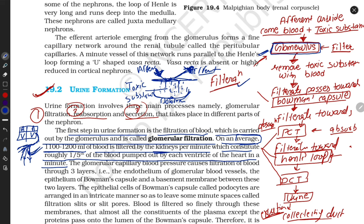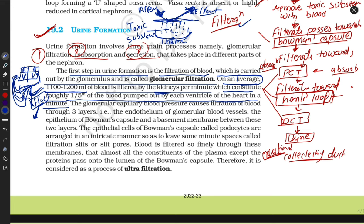This blood is carried by the afferent arteriole towards the glomerulus, where the glomerulus performs the filtration process. The ventricles take all toxic or non-oxygenated blood from the body and also pass it through the kidney. The kidney filters the blood and removes all toxic substances from the blood.